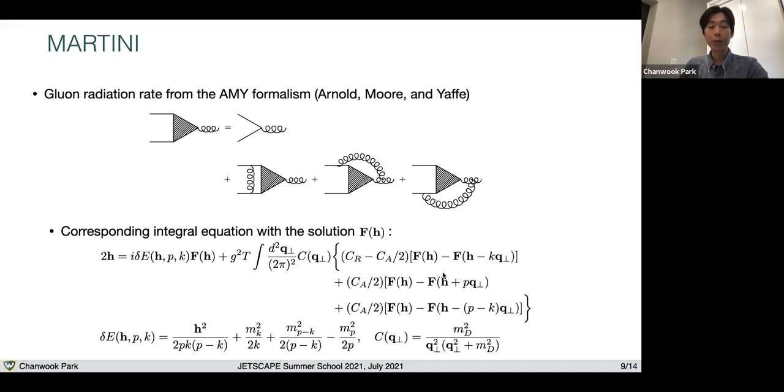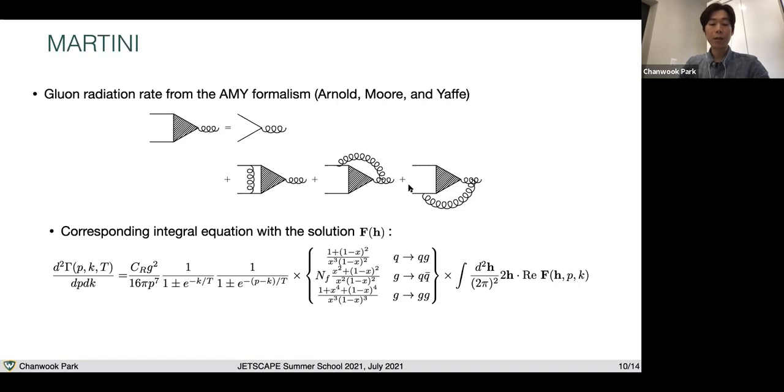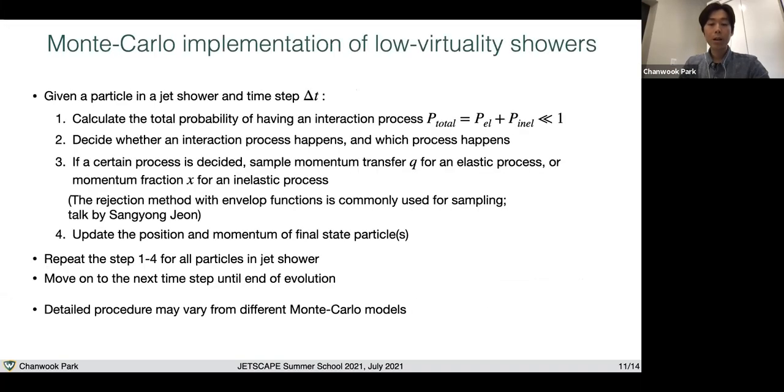This H represents how collinear between two final state particles. This delta E is the energy difference between initial state and the final state particles. This C is the scattering cross-section. There are three terms on the right-hand side, and each of them corresponds to each of these diagrams. If you solve these equations, then you get this gluon radiation rate here, where P is the momentum of the incoming parton, and K is the radiated gluon's momentum. This part is the splitting function in the medium, and this part can be solved numerically.